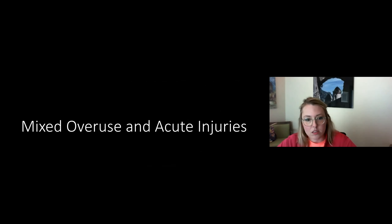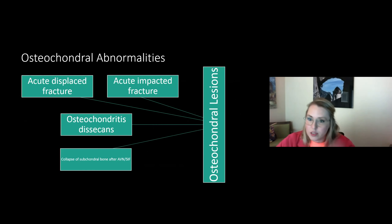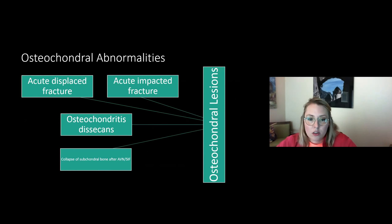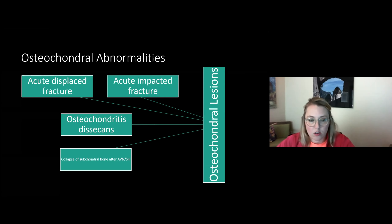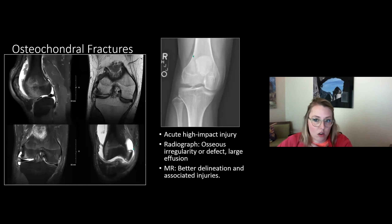Osteochondral lesions are a radiographic endpoint with multiple causes. The first is an acute displaced or impacted fracture. The second is osteochondritis dissecans, which leads to an osteochondral lesion. More rarely in pediatrics, and not related to sports, collapse of subchondral bone from avascular necrosis can also produce this picture.